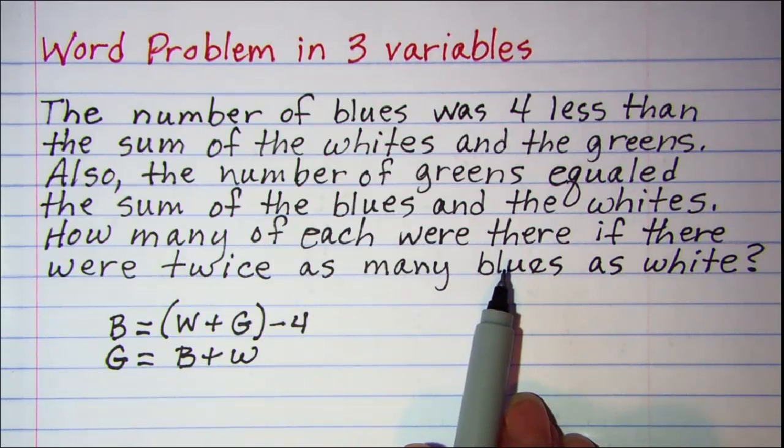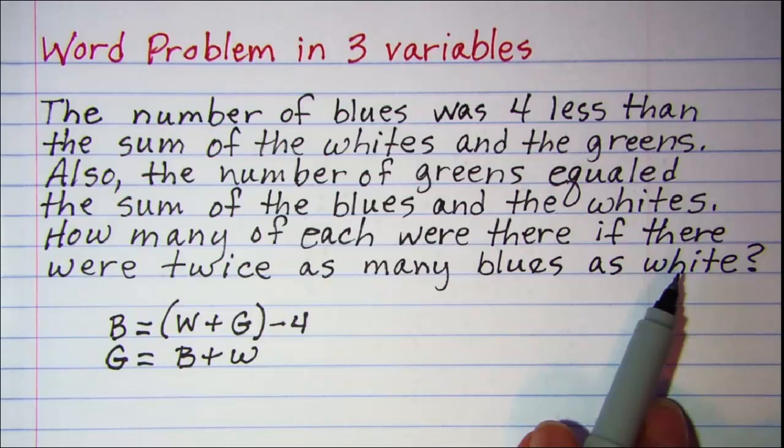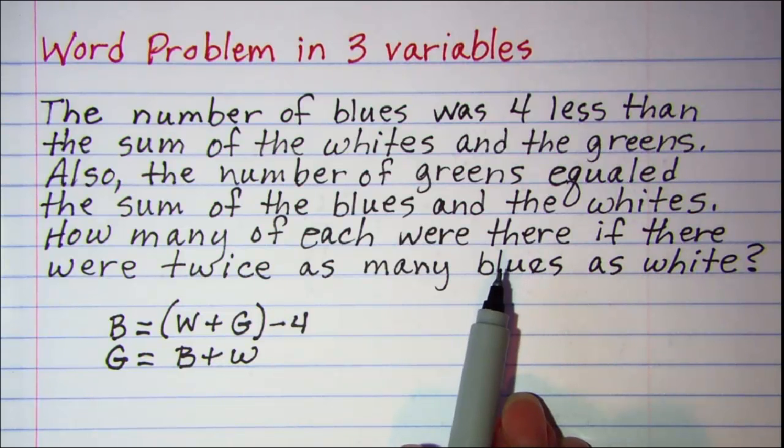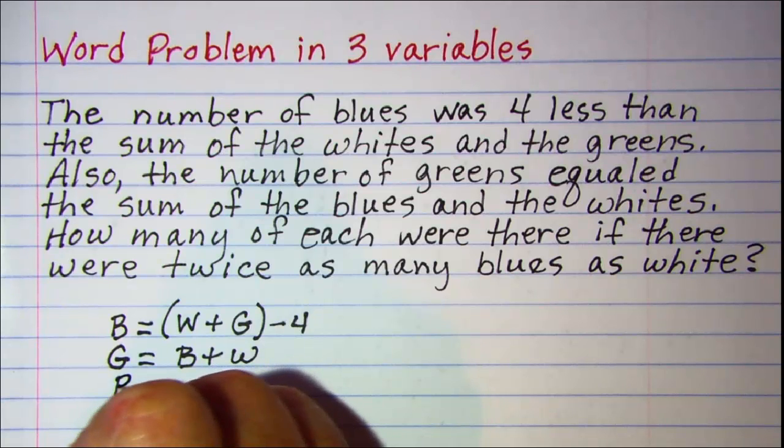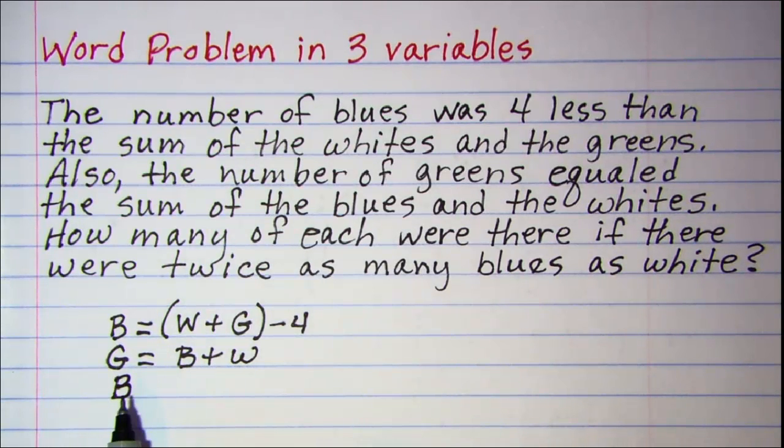that means the number of blues is a larger number than the number of whites. So blue has to stand alone on one side of the equation. And remember that an equation says that two things are equal, so blues are bigger, so we're going to have to multiply our number of whites by two.